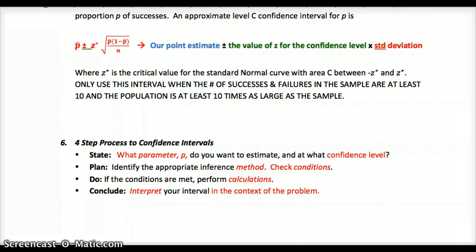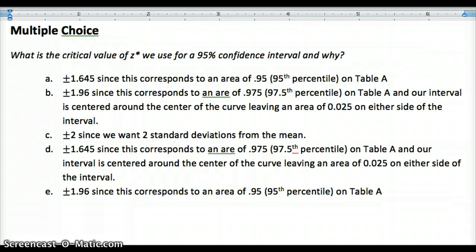That brings us to our multiple choice. Your multiple choice question is: what is the critical value of z-star we use for a 95% confidence interval and why? You have five options here. If you're unsure, look back in the video. Please also read over the examples in the book and the lesson in the book before going on and answering that conceptual question, identifying the conditions, and to get a good sense of how to solve these problems before coming into class. Also take a look at table A and see what it says about these values, so you can get a sense of what I was saying about the true critical value we use for z-star.